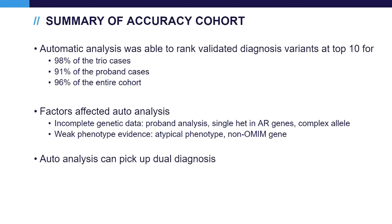In summary for the accuracy study, automated analysis ranked the diagnostic variant in the top 10 for 98% of trio cases, 91% of singleton cases, and 96% overall across the entire cohort. Factors that can affect automated analysis include incomplete genetic data — such as singleton analysis, a single heterozygous variant in an autosomal recessive gene, and complex alleles — as well as weak phenotype evidence, including atypical phenotype or variants of uncertain significance with limited literature support. Automated analysis can also detect dual diagnoses.